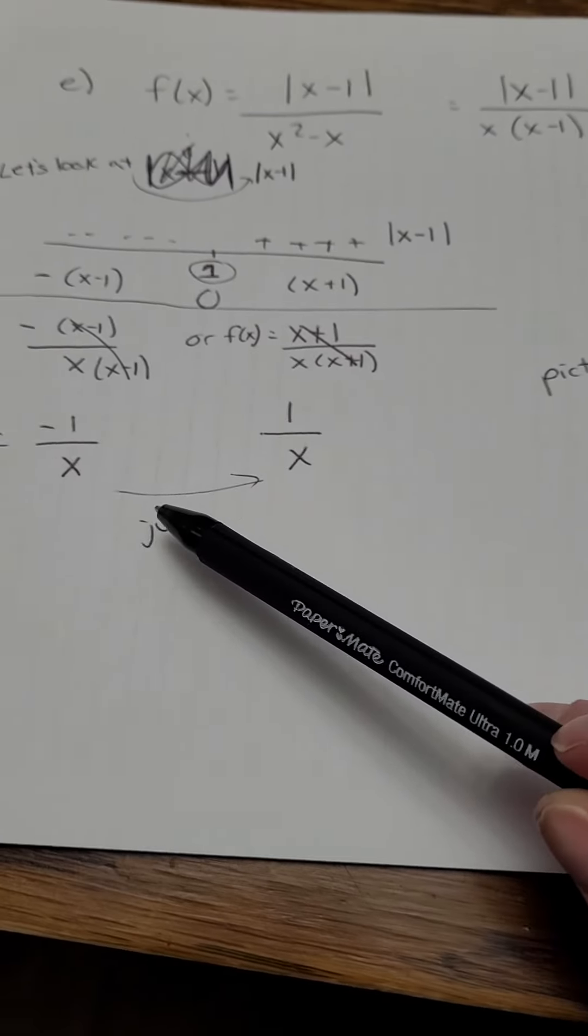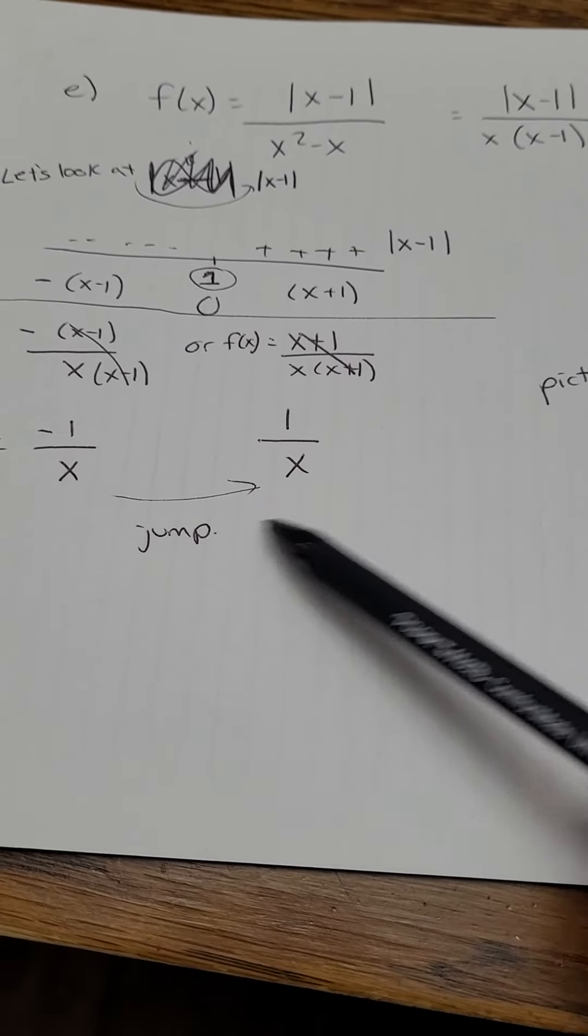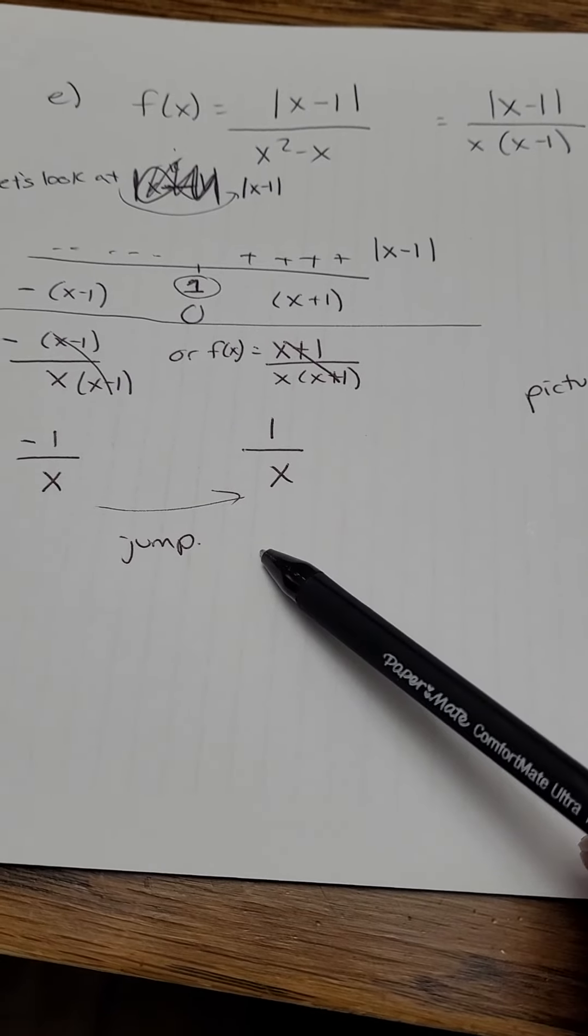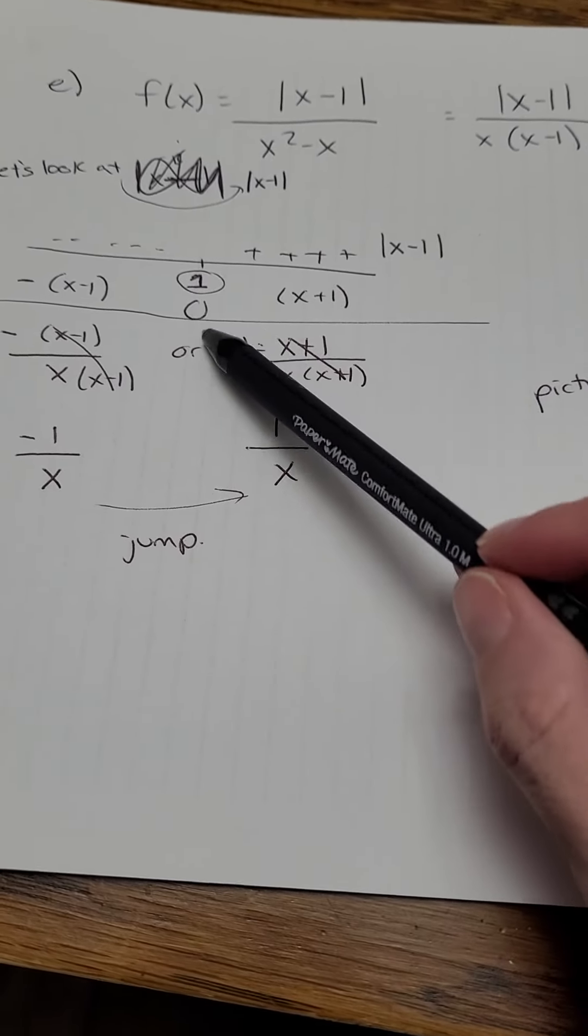So you can see it has two different values, negative 1 over x and 1 over x, depending on where it is on the graph, and that point where it jumps is 1.